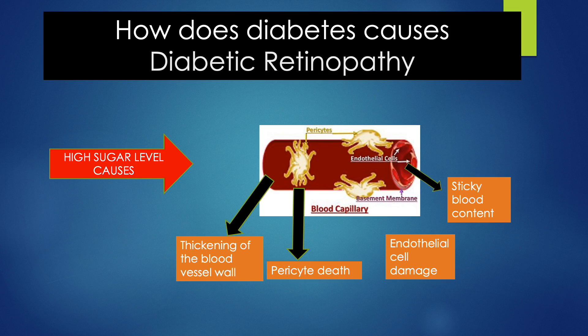Diabetic changes to the eye are called diabetic retinopathy. There are many stages of the disease which will be discussed later.